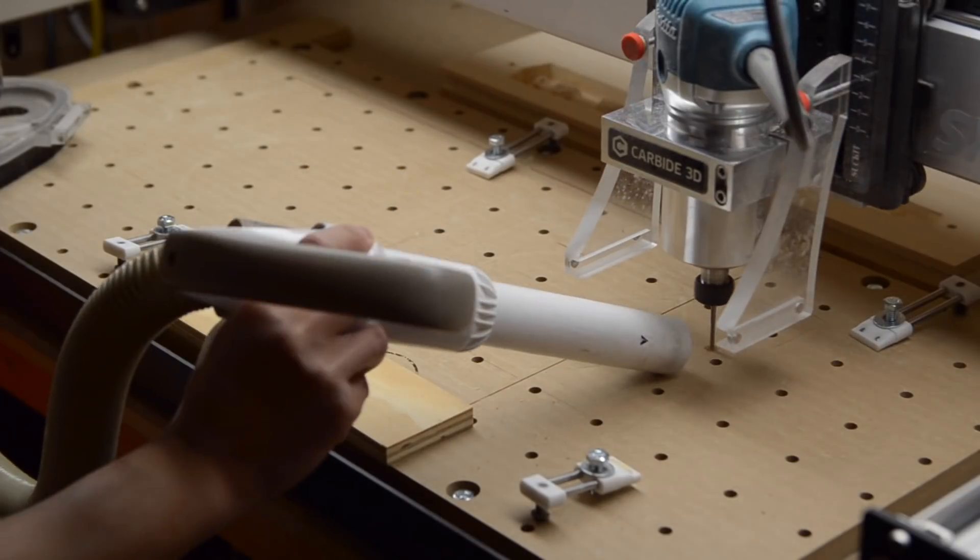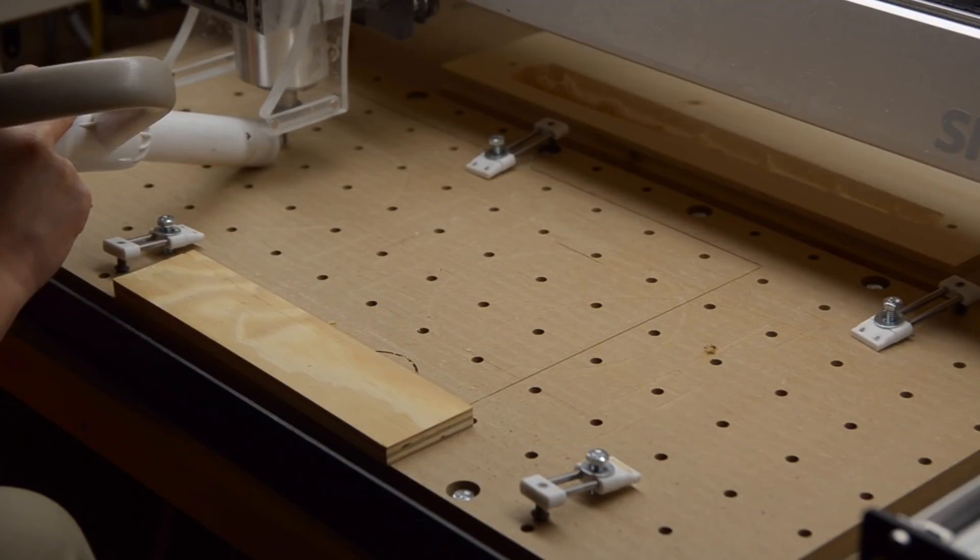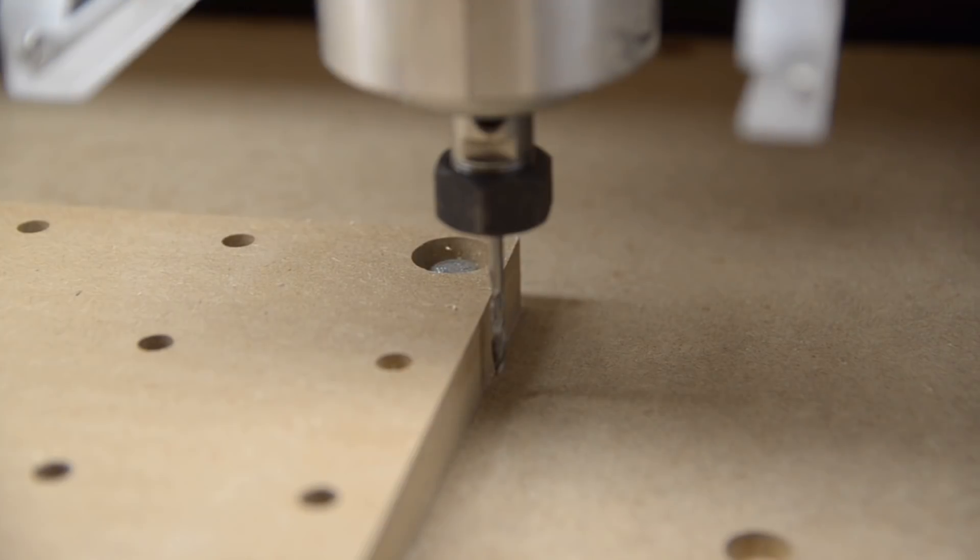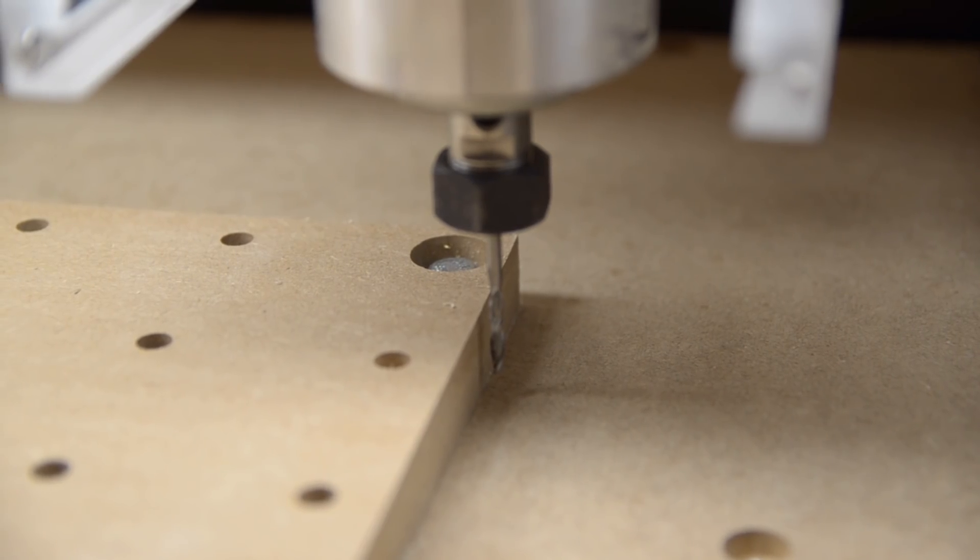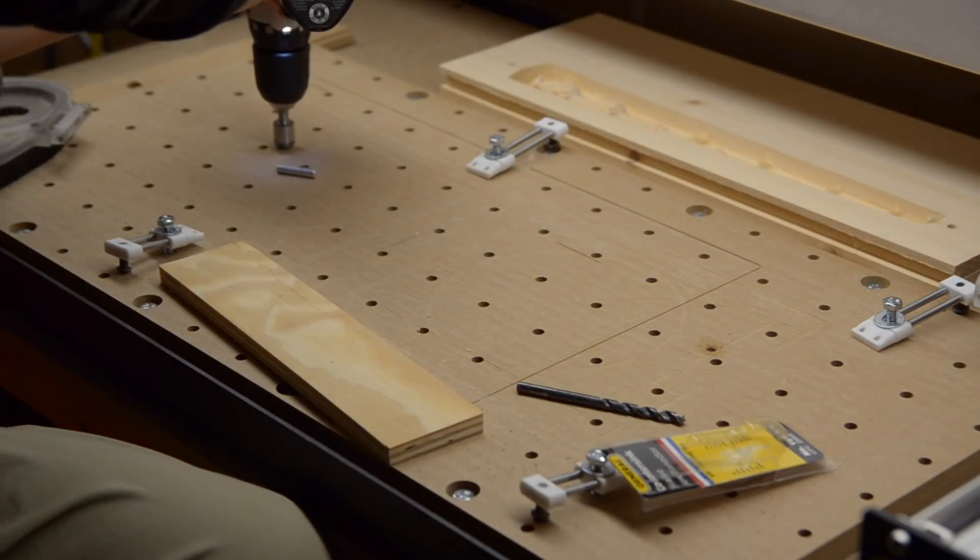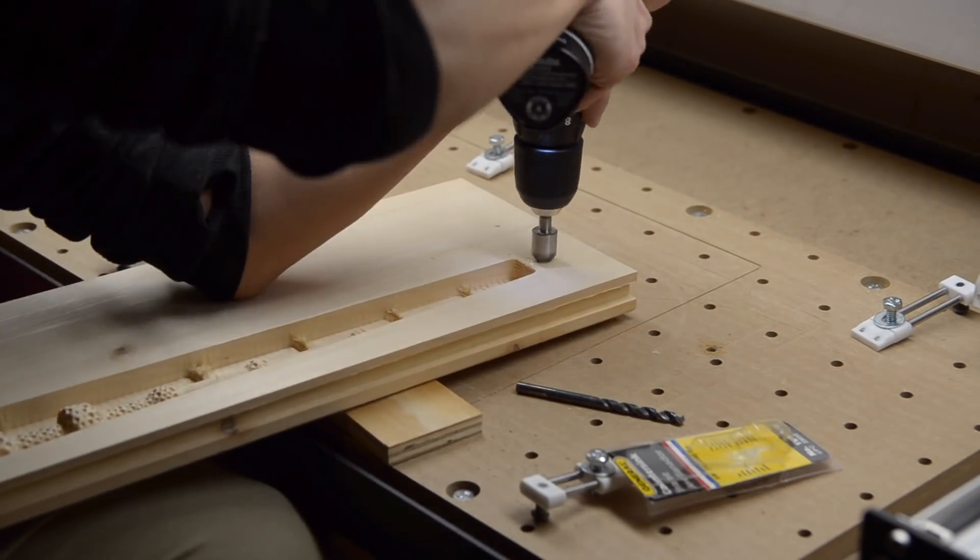After that was done, I bored out a pair of holes in my waste board to accept aluminum indexing pins. It's helpful here to use a longer reach end mill since the Makita is marginally shorter than the Dewalt spindle option. These holes ended up being a little too snug so I opened them up a bit more by hand.